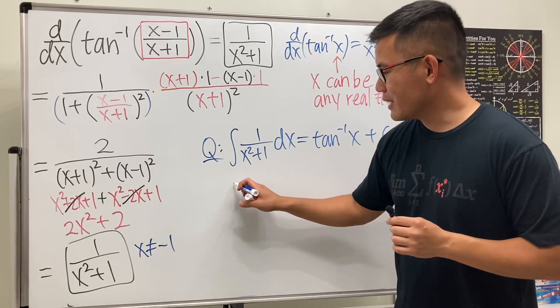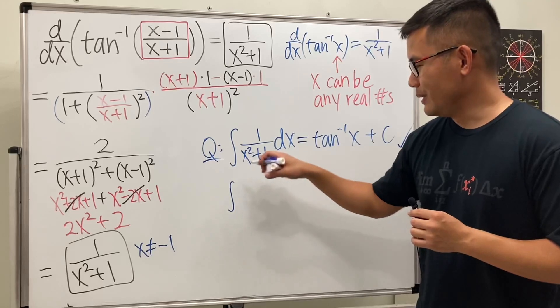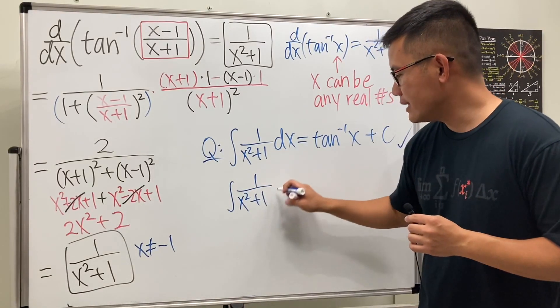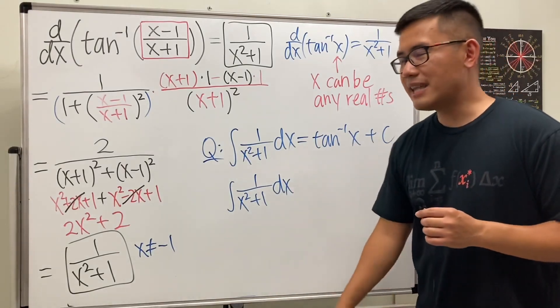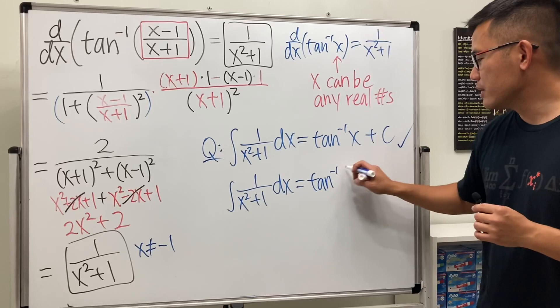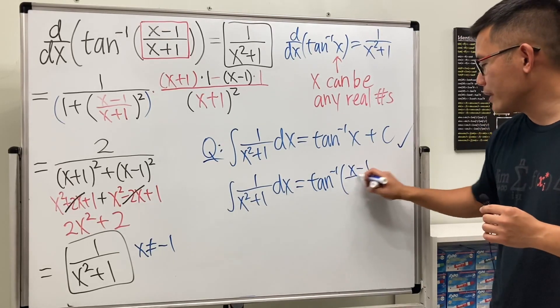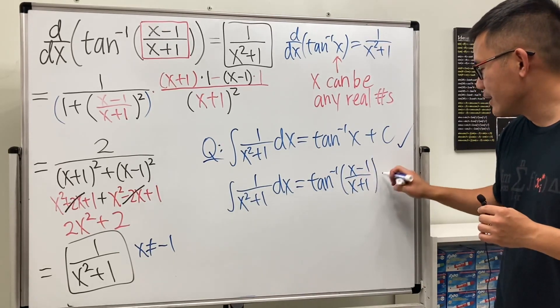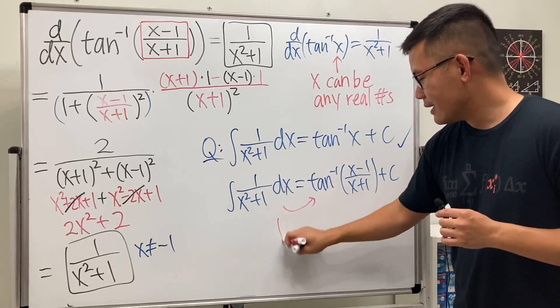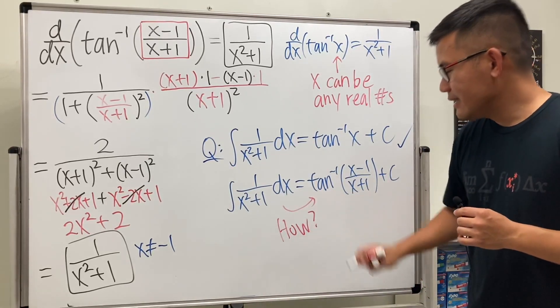But, my question for you guys is that, is it possible for us to integrate 1 over x squared plus 1 dx, and somehow end up answering inverse tangent of x minus 1 over x plus 1, and then plus c. So, how? Well,